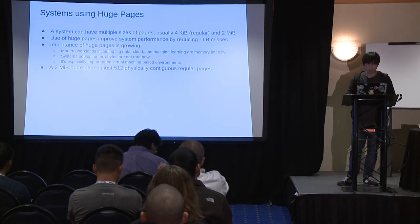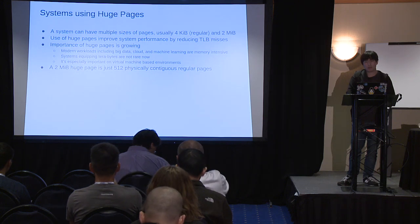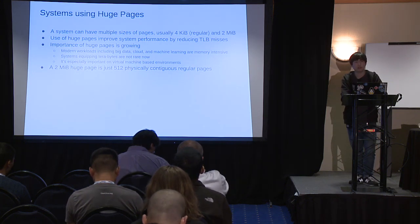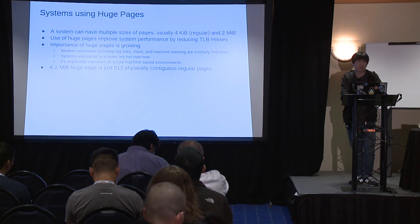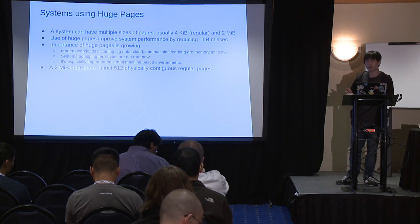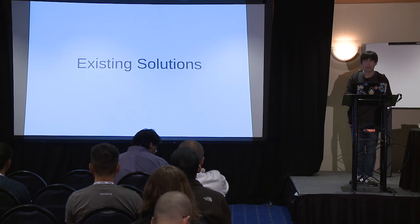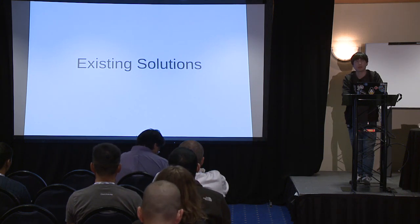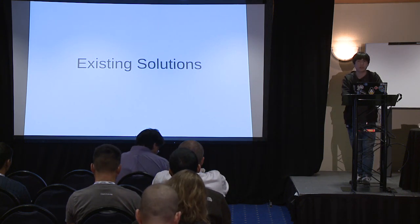A 2-mibibyte huge page is just 512 physically contiguous regular pages, so we need contiguous memory allocation in this case as well. There are many existing solutions, but they all have some limitations.